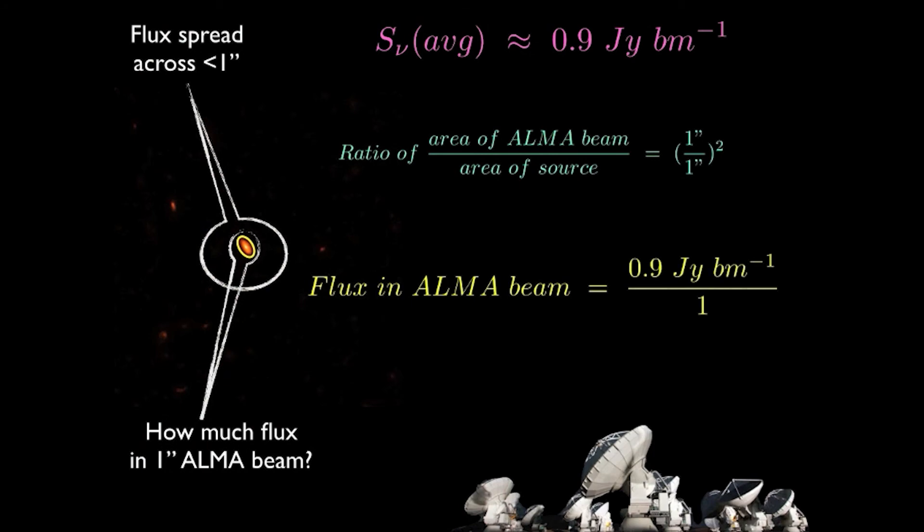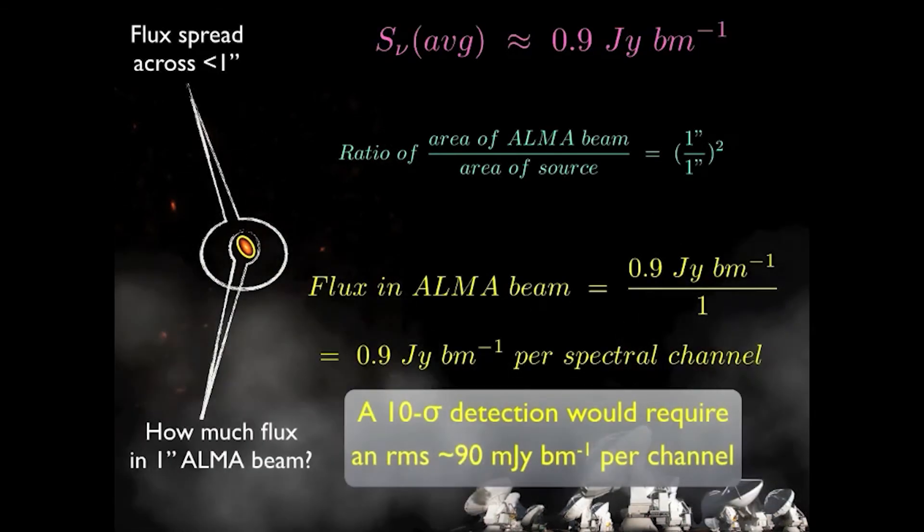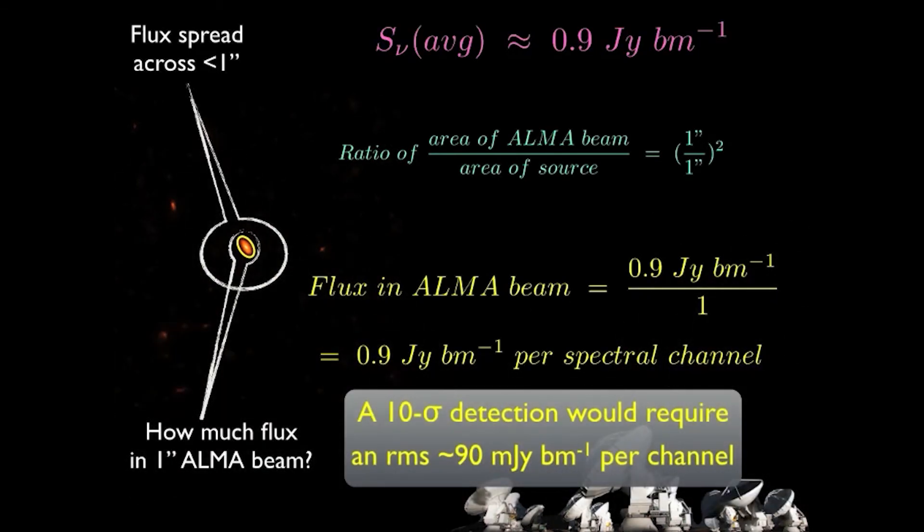Conversely, if the source were only 1 arcsecond or smaller in size, the expected flux density would be the full 0.9 Janskys per beam. A 10 sigma detection of line emission per channel would require a sensitivity of 90 millijanskys per beam.